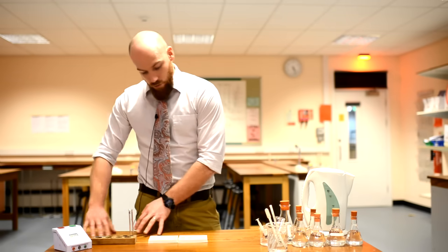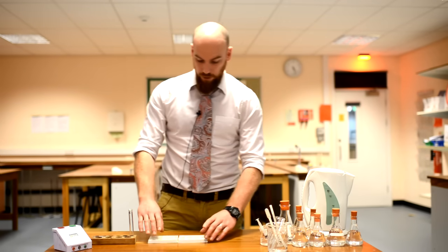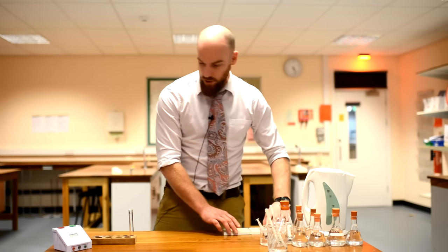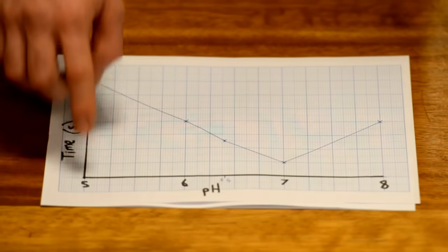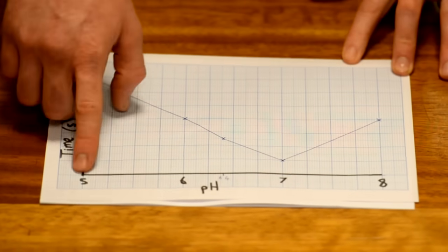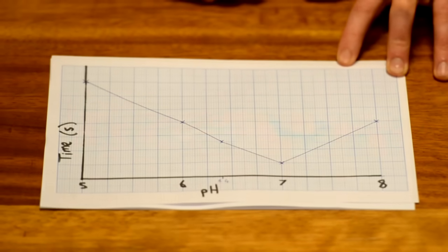Then you would repeat the test with a different pH and hopefully gain some results not dissimilar to this one where you can see time increasing on the y-axis and pH on the x-axis, and the optimum pH you would expect is 7.